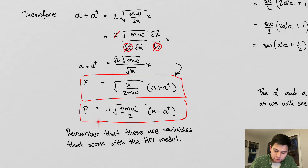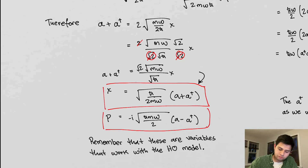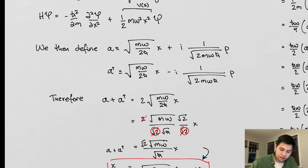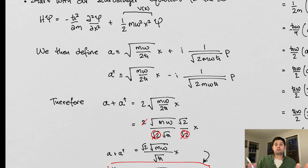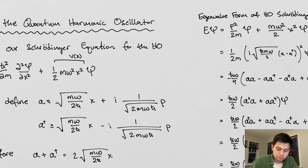You can do the same thing and get the corresponding relationship for the difference between the two, which gives you the momentum operator. So all we've done is define two variables, require that one is the complex conjugate of the other, and then solve for position and momentum in terms of these two things. We still don't know what they are yet. Now let's put them into the harmonic oscillator model and see what happens. This is the eigenvalue form of the Schrödinger equation for the harmonic oscillator.